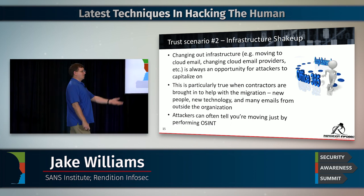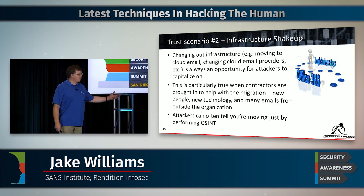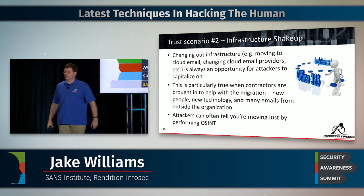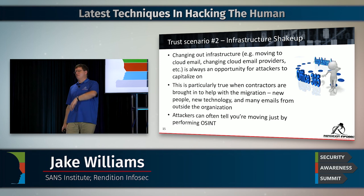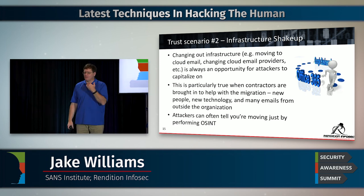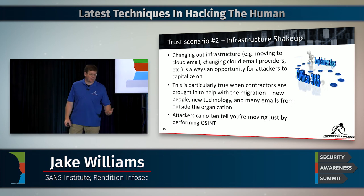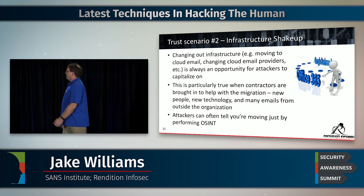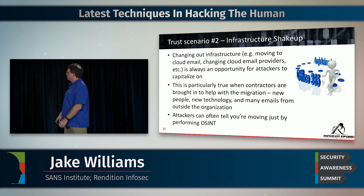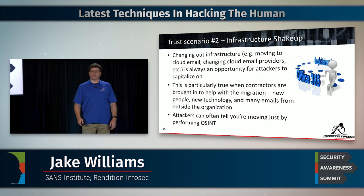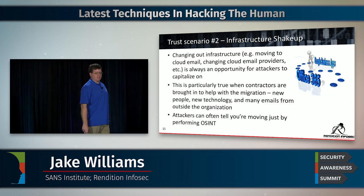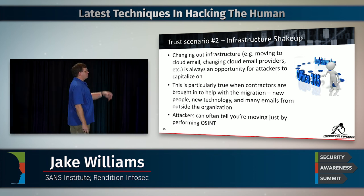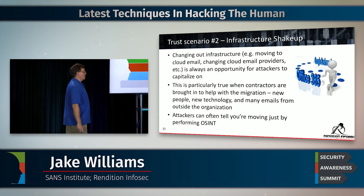Some people say, 'Well, in Office 365 or Google Apps for Business there's a cost to creating each email account, so we could save a few hundred dollars.' Don't save a few hundred. The cost of a breach is very clearly higher than that. Also, attackers can tell you're moving just by performing OSINT — they can look at DNS and see that you're starting to make this migration by watching you set up domains and changing mail exchange records.